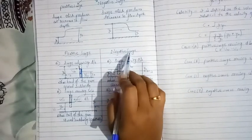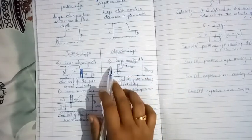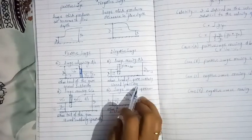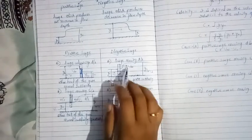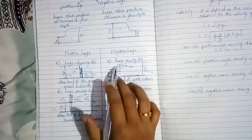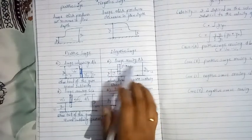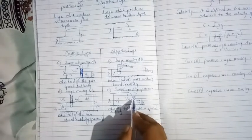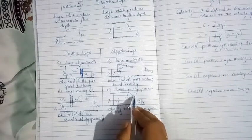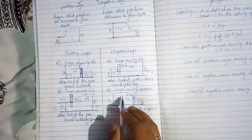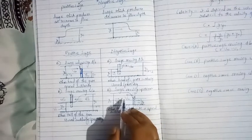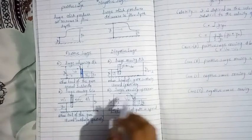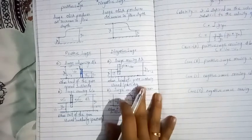Next we look at negative surge cases. The first case is when the head of the gate is suddenly partially closed — the wave tries to move toward the downstream side, forming a negative surge moving downstream. The second case is when the tail of the gate is opened suddenly — the wave tries to move toward the upstream side, and in this case the surge formed is a negative surge moving upstream.